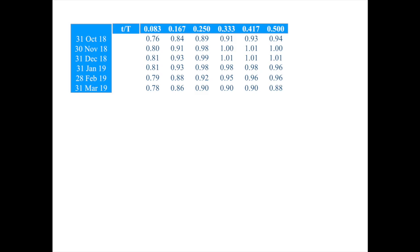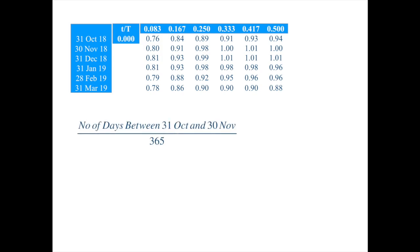To do this, you set one of the dates — say the first date — equal to zero, and then measure each other date as a distance from this base date in years. For the second entry, you count the number of days between that date and the base date and divide by 365. If you don't want to be pedantic, the numerator is one month and the denominator is 12 months, giving 0.083. Each subsequent entry is a further month away, so you just add 0.083 each time. We can then get rid of the calendar dates.